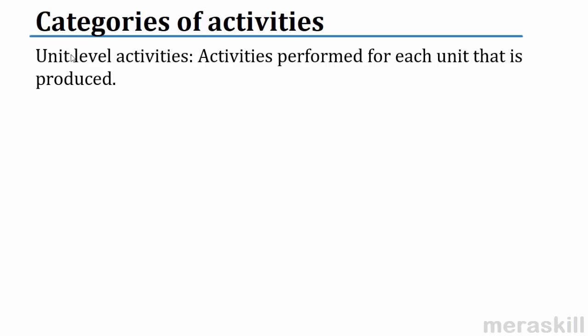What does that mean? These costs will go up as the number of units go up. For example, a simple thing is the material cost. So, the more number of units — suppose one unit consumes five pounds of a particular material, five units will consume 25 units of that material. Those are called unit level activities, where the resources which are consumed increase or decrease as per the number of units produced. All direct costs are unit level activities.